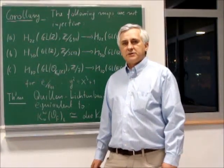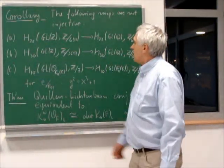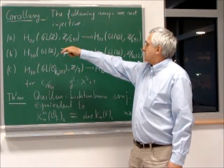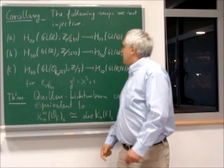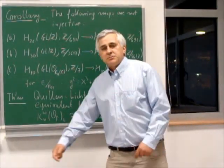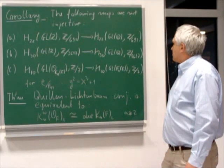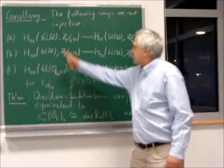In particular, we have the following corollary, which says that the maps on homology of general linear group of ring of integers to homology of general linear group of field are not injective. The first two examples concern